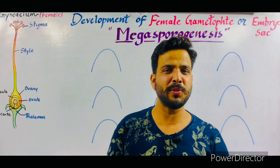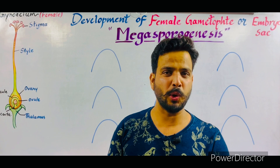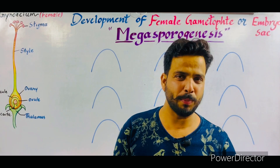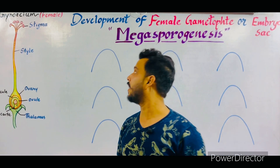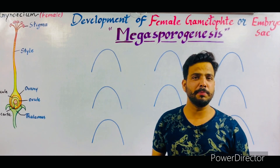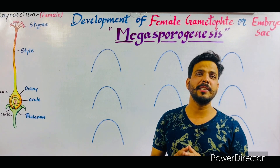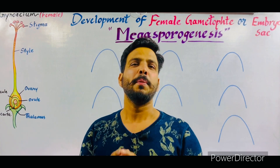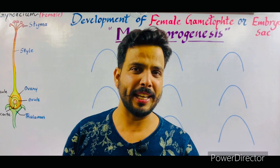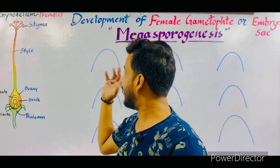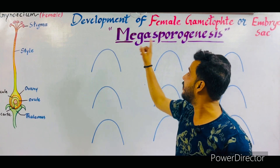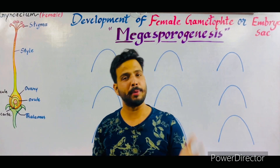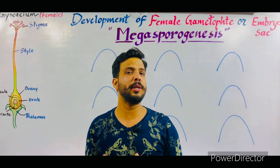Good morning everyone, my name is Vijay Gupta and you are watching biology classes. Welcome to all of you. In this lecture I will continue our chapter number 2, that is sexual reproduction in flowering plants, especially for my class 12 students, BSc students and also for my NEET students. In this lecture I will discuss about the development of female gametophyte, or the development of embryo sac.